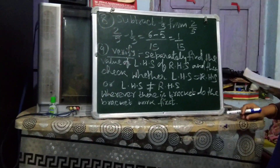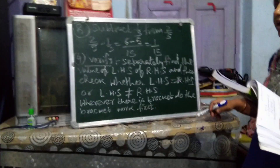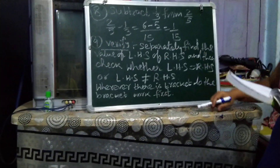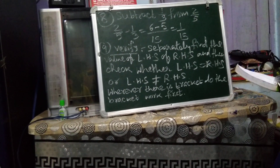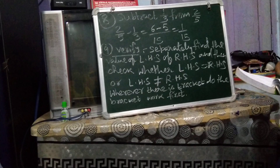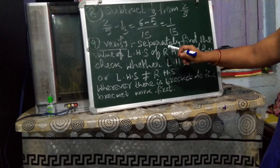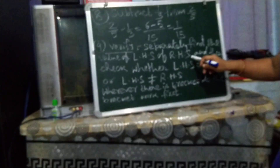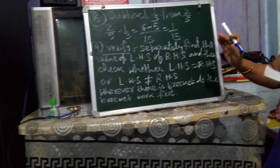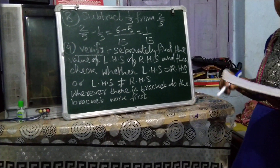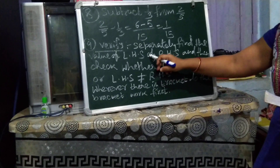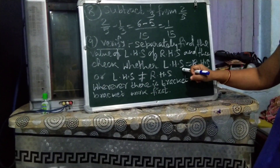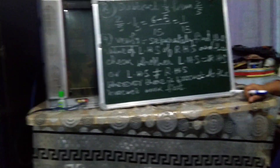In that way you will complete question 8. For question 9, open your book at Exercise 1A. The verify questions ask you to find the value of LHS and RHS separately. For example, find 1/3 minus 1/4, then find 1/4 minus 1/3, and check whether LHS equals RHS or not.